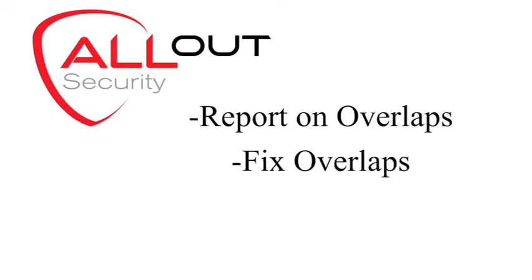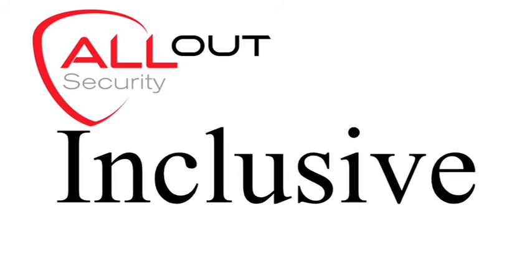Are you worried about data security? We have an excellent solution for problems associated with both row and business unit security. We can report on overlaps — these are the ranges that you inadvertently set up that slow down the execution of the underlying SQL statement. We can fix the overlaps and significantly improve response times, and we can combine ranges together from multiple roles to avoid the duplication that is inherent in E1. Are you still using the older, exclusive row security model? No worries — we can automatically convert you to inclusive.